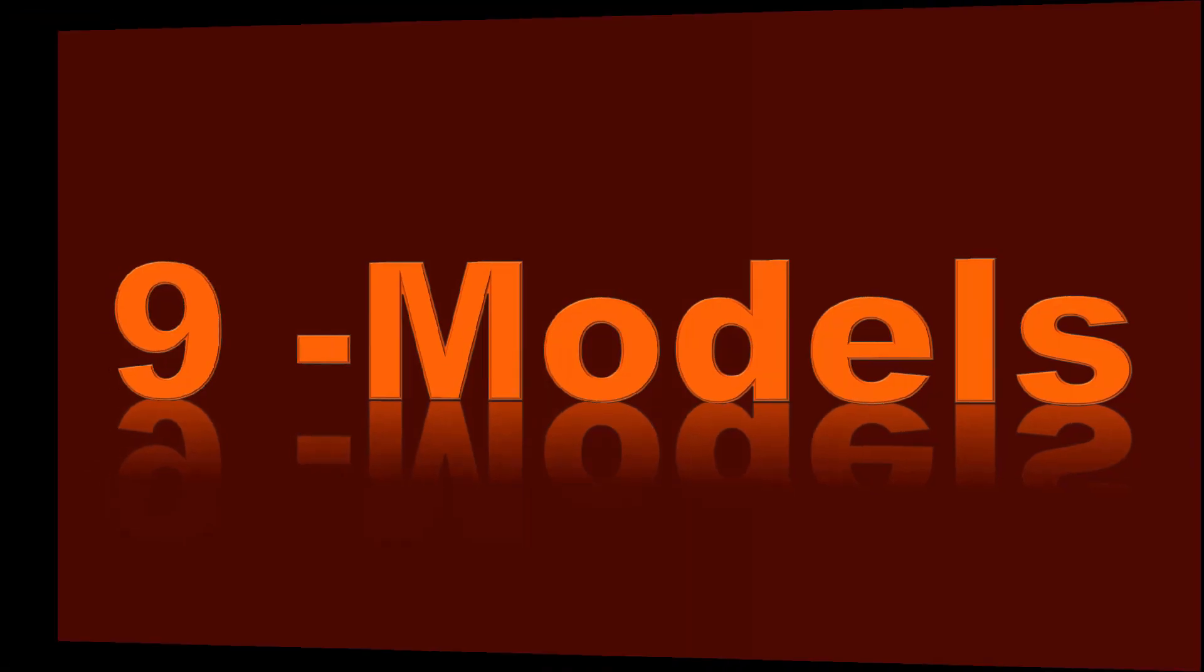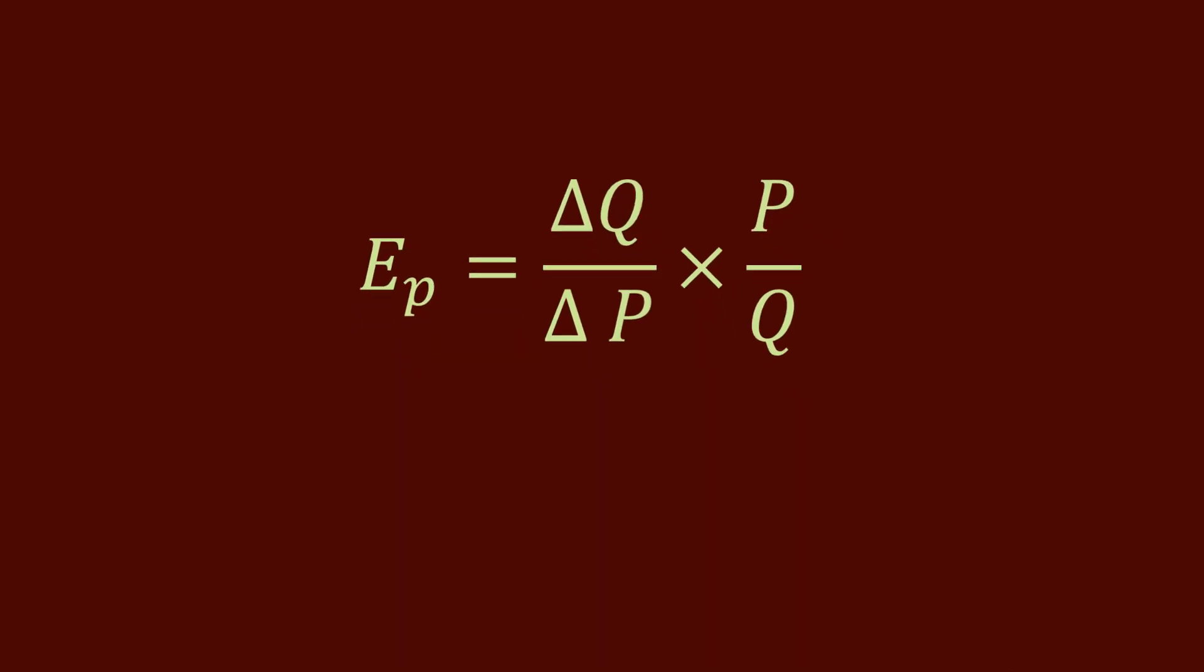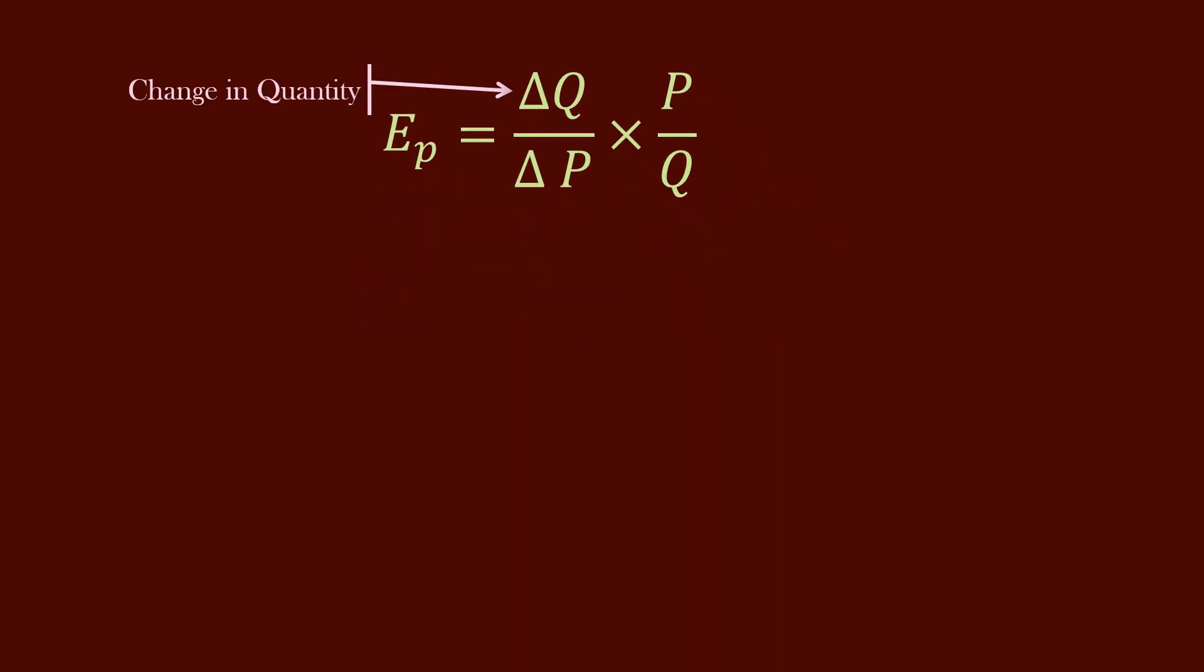Normally, in most textbooks, you will find this formula: Elasticity of Demand equals delta Q by delta P times P by Q, where delta Q is change in quantity, delta P is change in price, P is initial price, and Q is initial quantity.